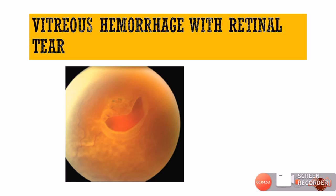Vitreous hemorrhage can also occur along with a retinal tear. In the picture shown, we can see a retinal tear where a normal blood vessel has come out along with the tear. Because of the traction and pull of the hyloid, the vessel can get injured and lead to vitreous hemorrhage.